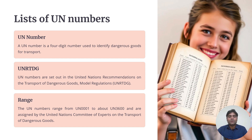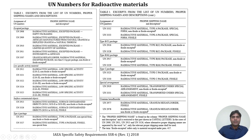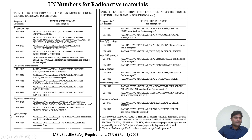These UN numbers are assigned by the United Nations Committee of Experts on Transport of Dangerous Goods. Certain numbers are used for transport of radioactive material, including excepted packages, low specific activity packages, surface contaminated objects, Type A packages, Type B(U) packages, Type B(M) packages, Type C packages, special arrangement, and uranium hexafluoride. For example, UN2915 is the number for a Type A package.